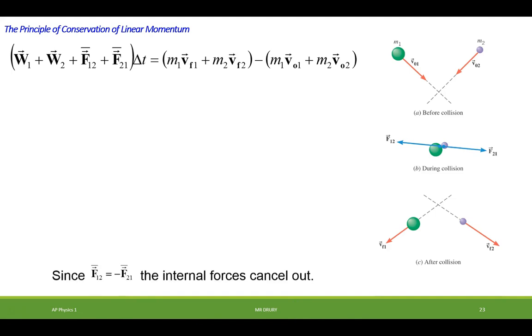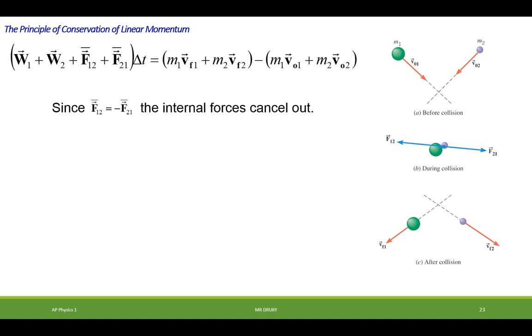So what does that leave us? Since F1 on 2, excuse me, F1 on 2, which is the force on 1 due to 2, is equal to negative force 2 on 1, they can cancel out. And we're just left with this, which is the external two external forces added together, times the time equals the change of momentum.